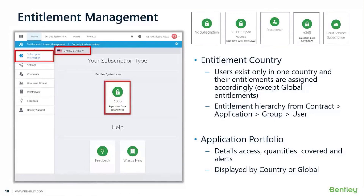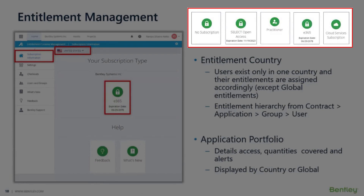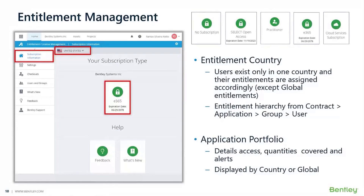In the subscription information, your subscription type is displayed, which can be a variety of agreements. Depending on what you have agreed with Bentley, five examples are shown: no subscription, select, open access, practitioner licenses, an E365 agreement, or cloud services subscription. Users can exist only in one country and their entitlements are assigned according to that country, except for global entitlements. Entitlements have a hierarchy inherited from the contract level, down to the application level, then group level, and finally the user level. Administrators can regulate all those layers.